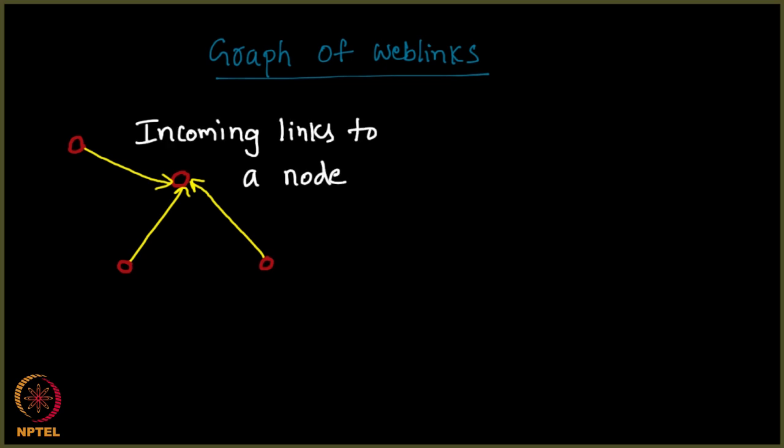So, these are the incoming links to a given node. Here the incoming degree is 3. That is called the degree.